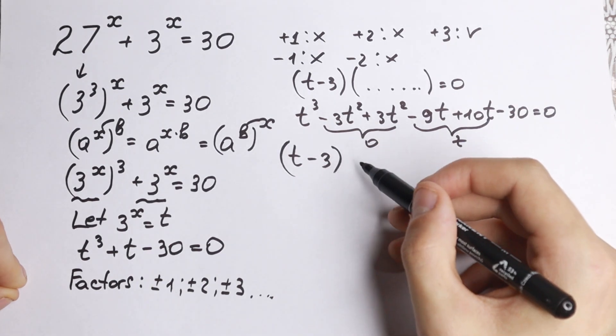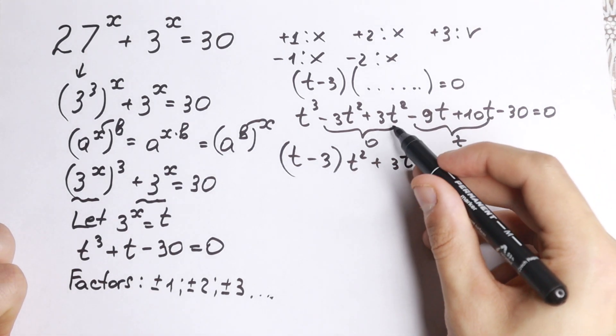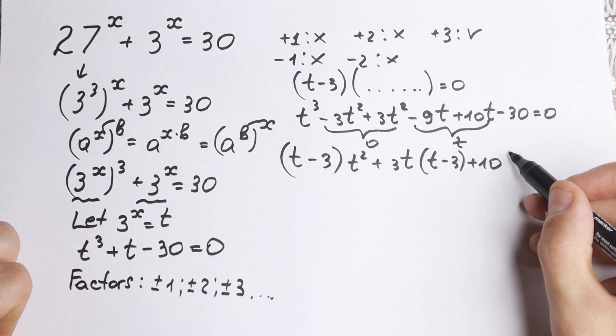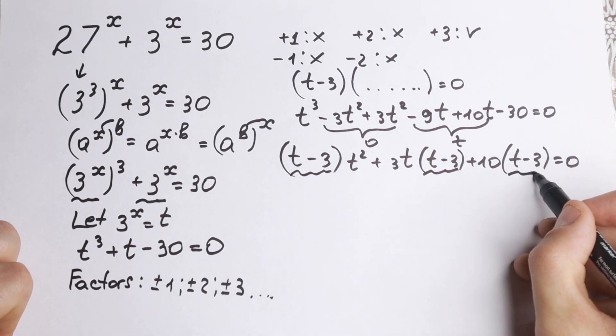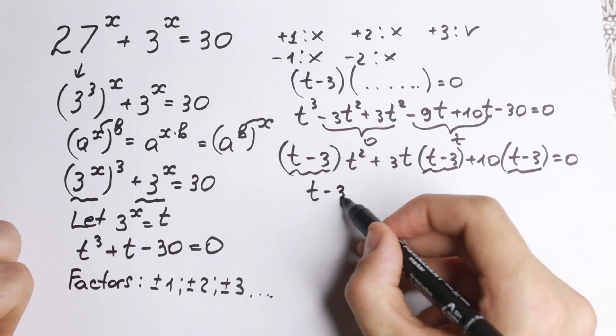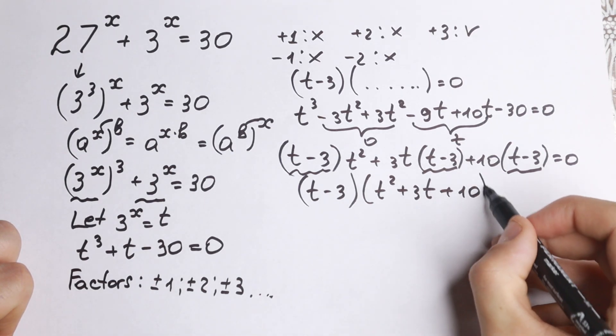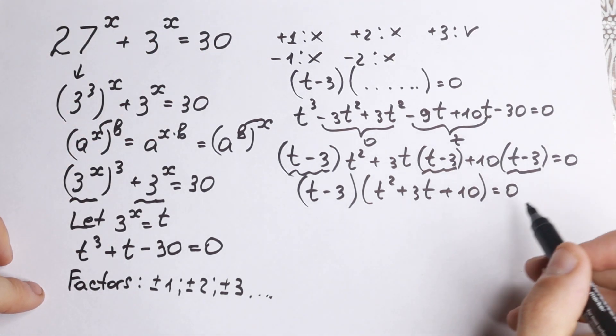But right now we can easily factor this t minus 3. So if we factor it, we will have t minus 3, and in parentheses we will have t square. The next, plus 3t from these both, we will have t minus 3 as well. And plus 10 from these both. We can easily factor it because we have t minus 3 three times. So we have t minus 3 and in parentheses, we will have t square plus 3t plus 10 equal to 0. This is my approach for factoring cube equations. Of course you can divide by t minus 3 or use other ways.